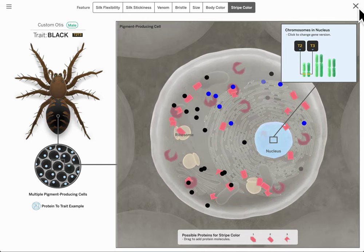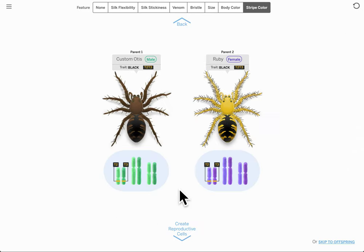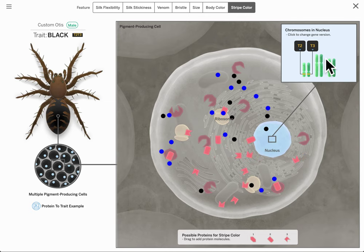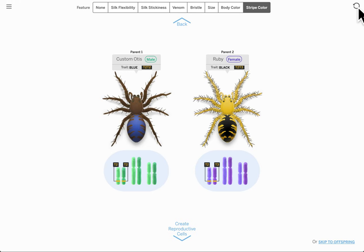If we combine parents of Otis and Ruby and look at it, what kind of offspring do you think - let me fix Otis back up here. So the original Otis and the original Ruby, if we look at them as parents, what kind of offspring do you think they would have?